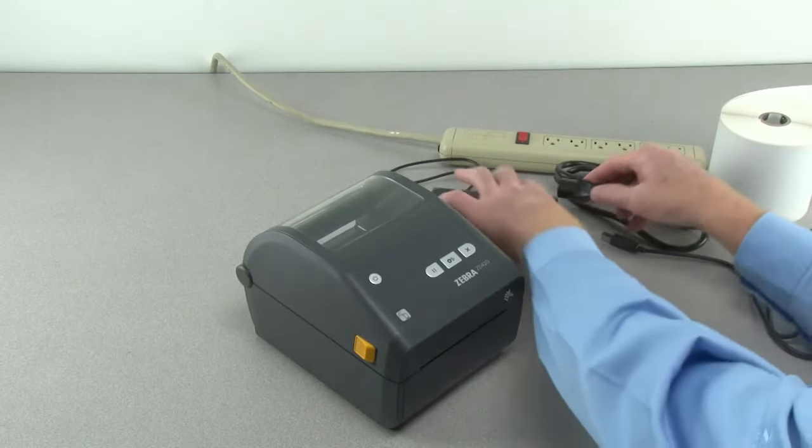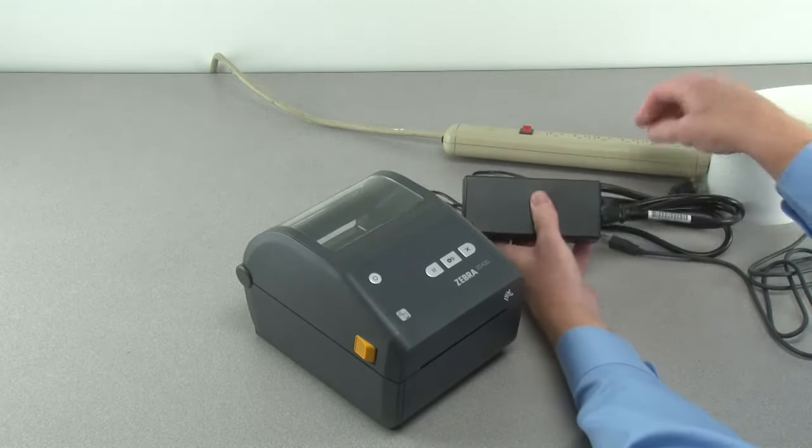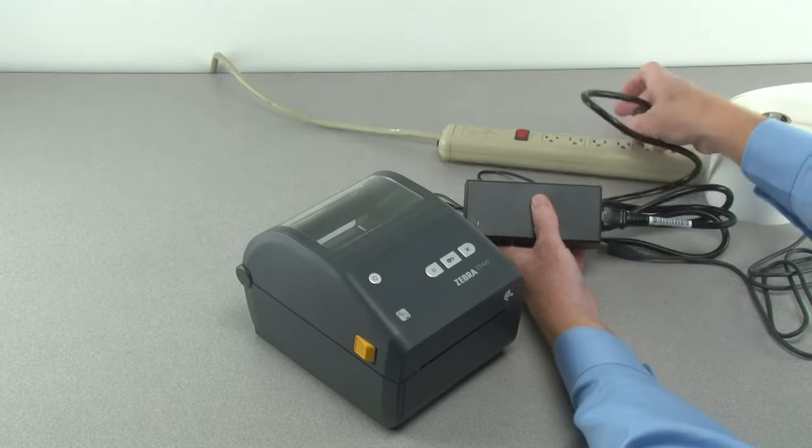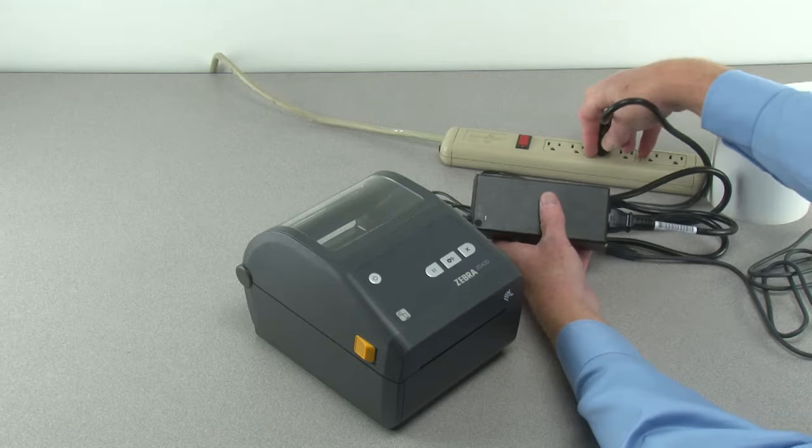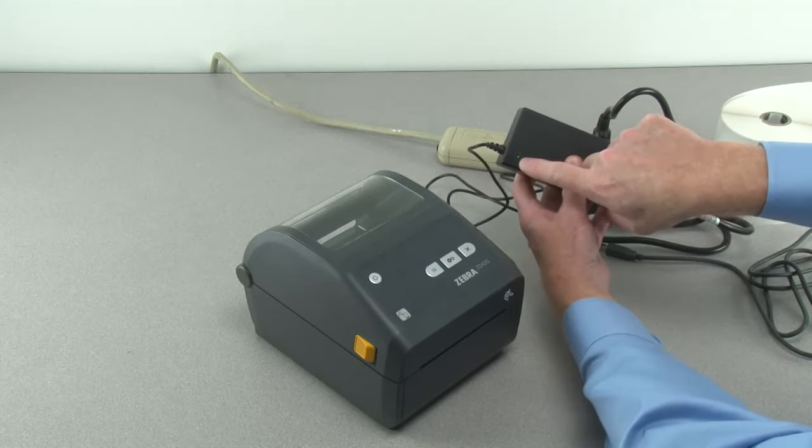Connect the power cord to the power supply. Then connect the power cord to an AC power source. Verify the indicator is illuminated.